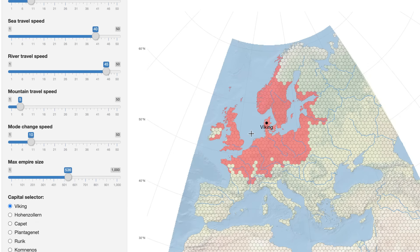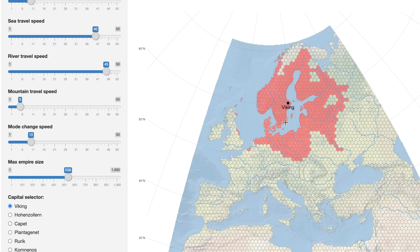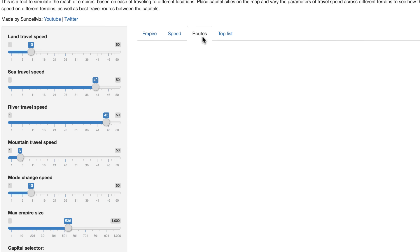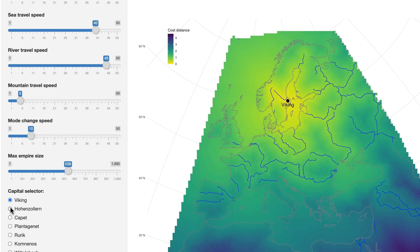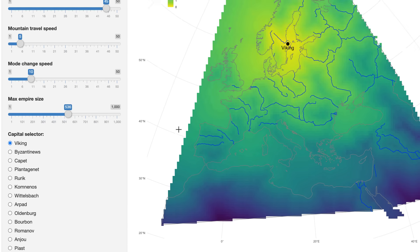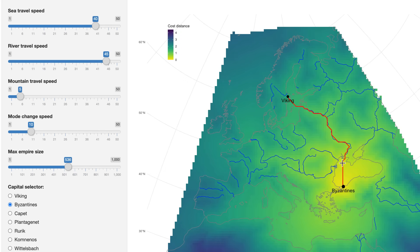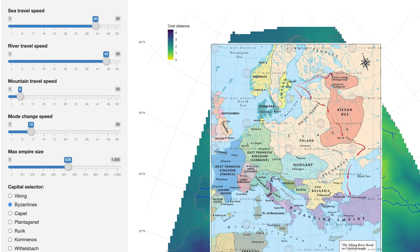We can increase the empire size a little and increase river travel speed, because that was really what the Vikings were good at — going up rivers. Placing the capital in Uppsala gives more emphasis to the east. Switching to the routes tab and placing the Byzantines in Constantinople — which we know the Vikings visited — the simulation suggests a route which follows the river down to the Black Sea. There does seem to be evidence that they actually did take this path, which I find interesting.